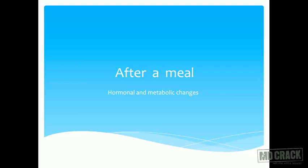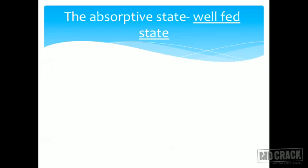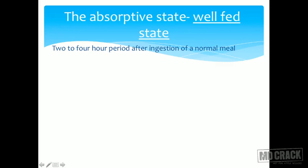Now let us look at what is happening after a meal — after a good breakfast, lunch, or dinner. We call this the absorptive state or the well-fed state of the body. This involves a two-to-four-hour period after ingestion of a normal meal. There is an increase in blood glucose, amino acids, and triacylglycerol from the diet — glucose has been digested and absorbed, amino acids have come from proteins, and triacylglycerol is present in chylomicrons being transported throughout the body.